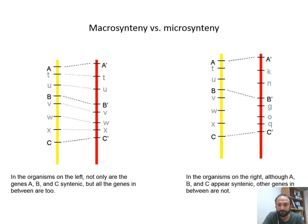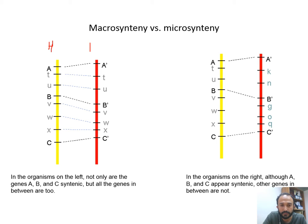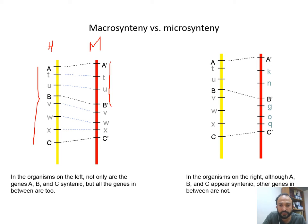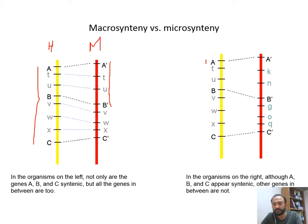There is another type of synteny: macro synteny and micro synteny. If a large part of a segment is conserved between two species — say human and mouse — a whole region containing many inter-related genes like T, U, V, W, X, C is syntenic: that is called macro synteny. But if there are small sets of regions — region A, region B, region C — that are individually syntenic to mouse, but the intervening genes between them are not syntenic, we call that micro synteny.